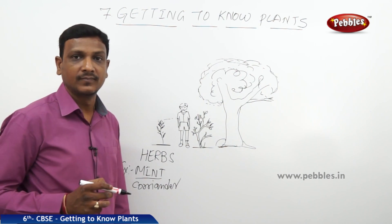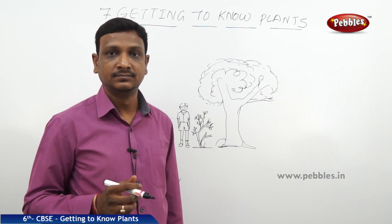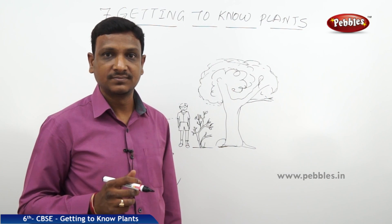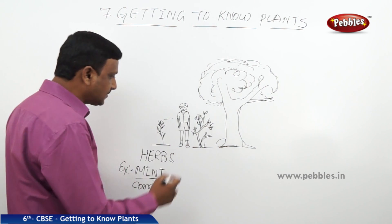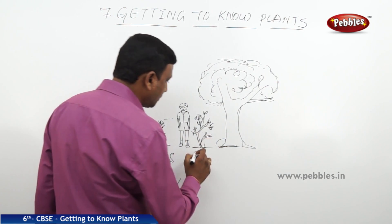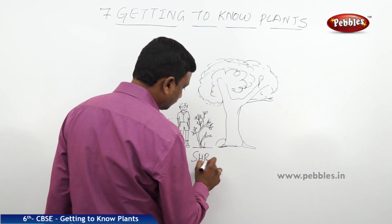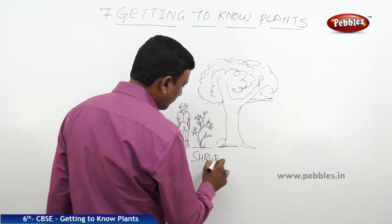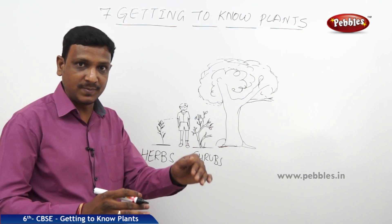Examples of herbs include mint and coriander — these are small herbs.